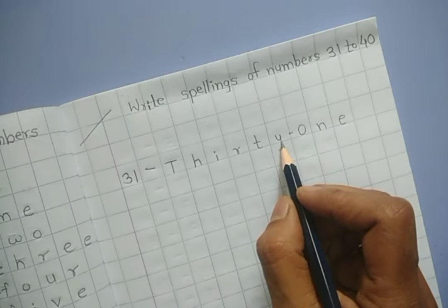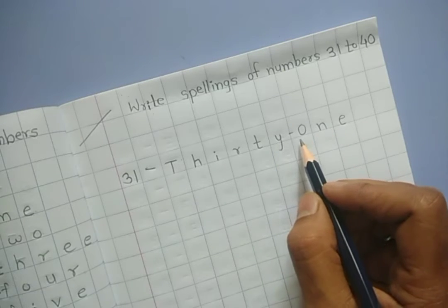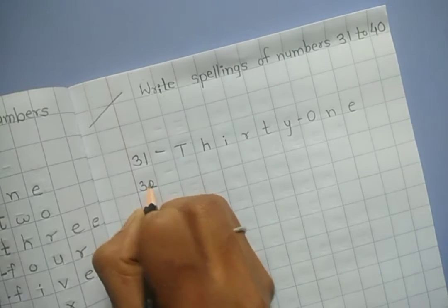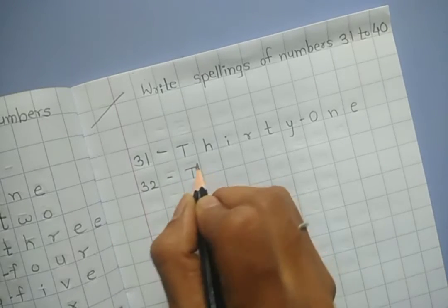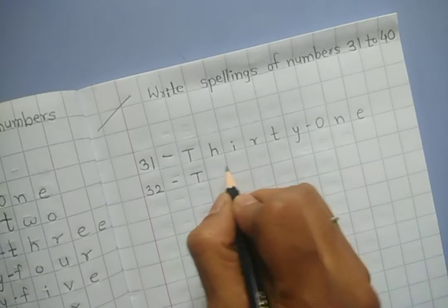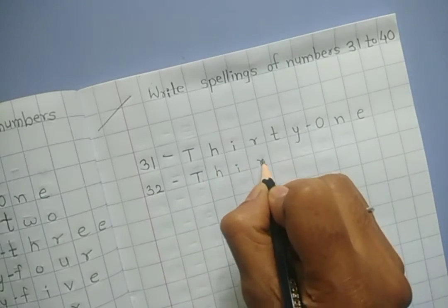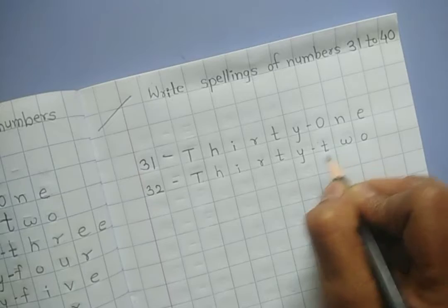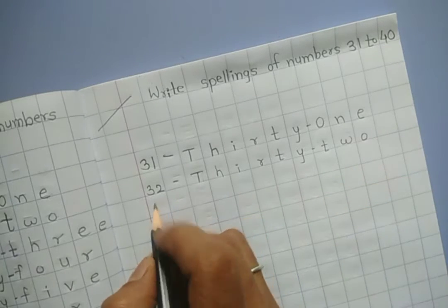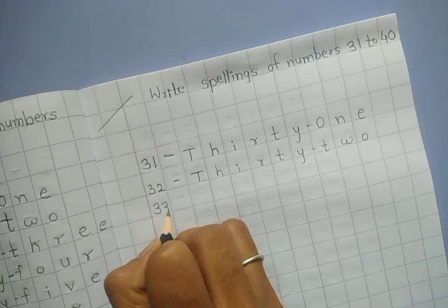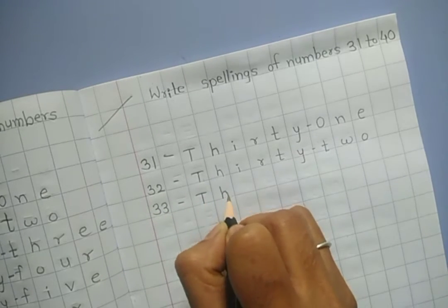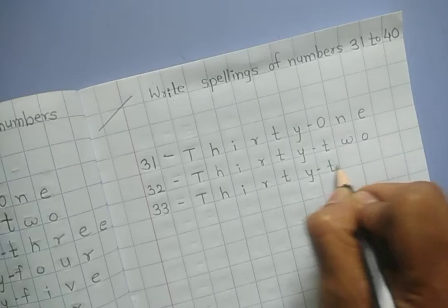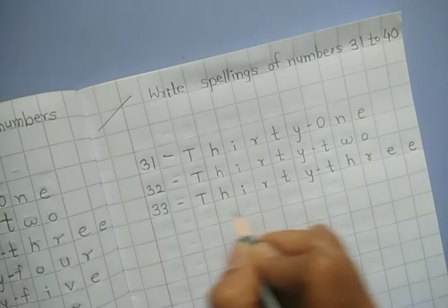Next number is 32, T-H-I-R-T-Y-T-W-O, thirty-two. Next number is 33, T-H-I-R-T-Y-T-H-R-E-E, thirty-three.